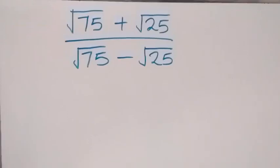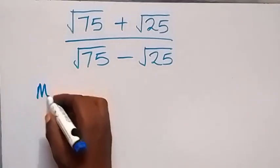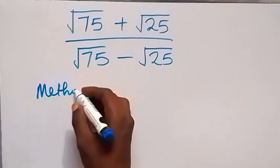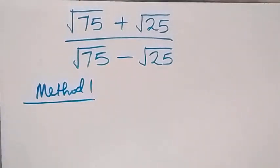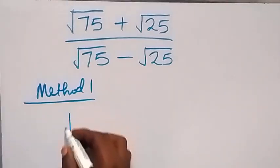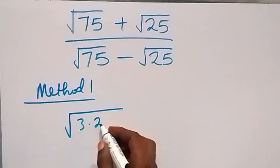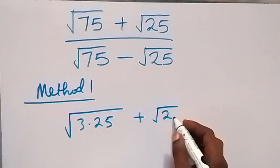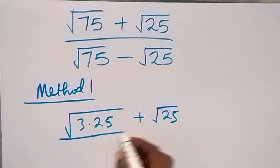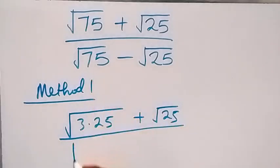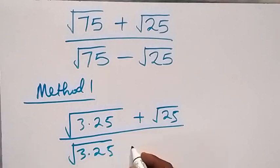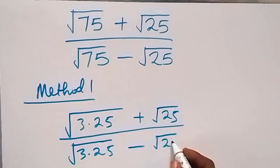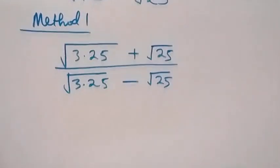Hello, you are welcome. We have a nice square root problem to solve with two methods. For the first method, we can write this as root 3 times 25, that's root 75, then plus root 25, divided by root 3 times 25 minus root 25.